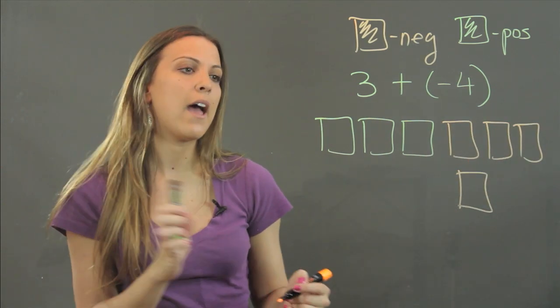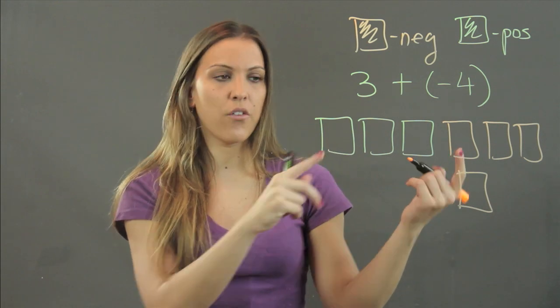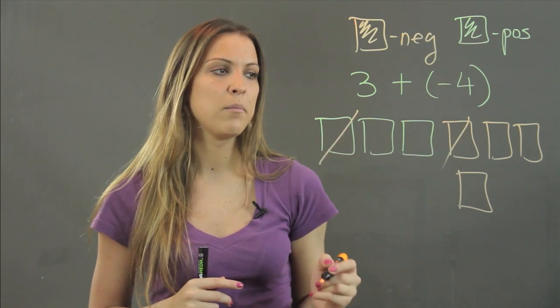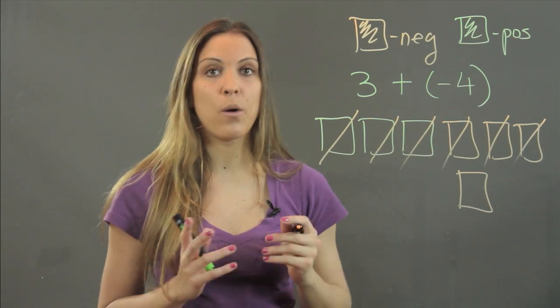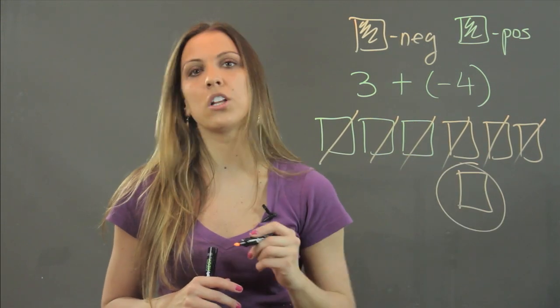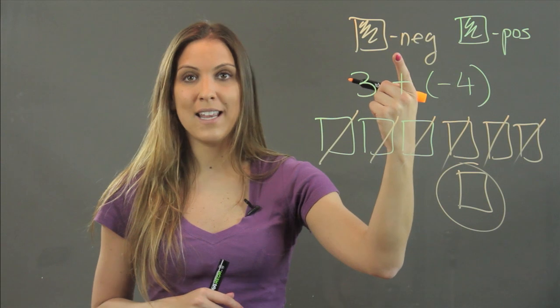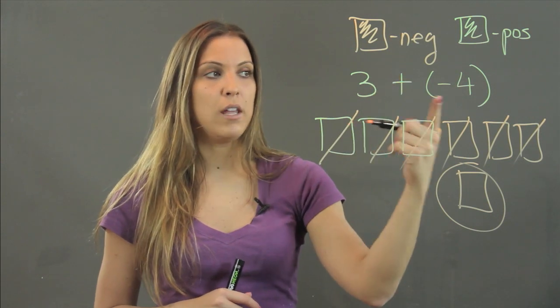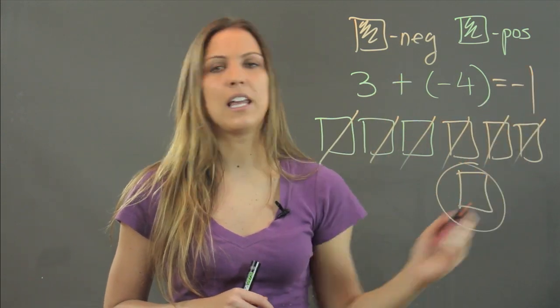And now if the kids remember that every green and orange cancel each other out, what they're going to do is here's one pair, here's another pair, and here's another pair. And now what am I left with? I'm left with one orange tile. And because orange represented a negative number, that means that three plus negative four is negative one.